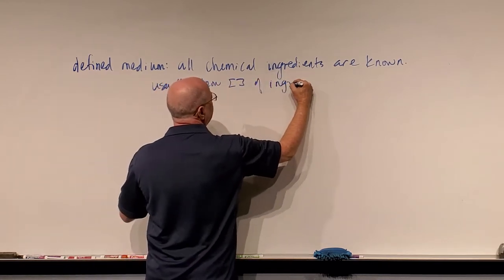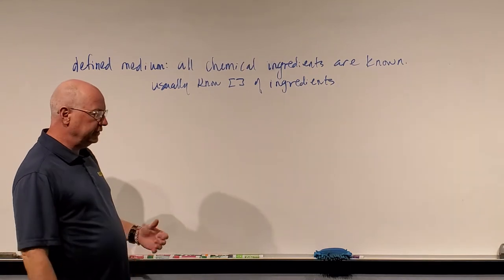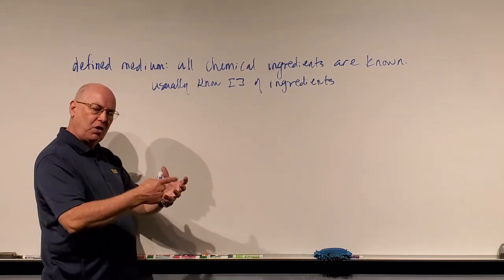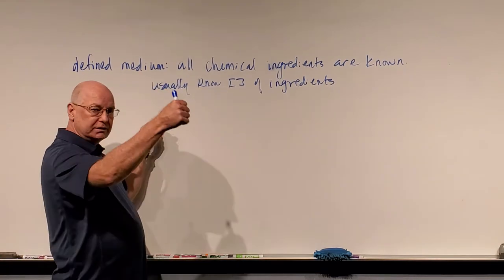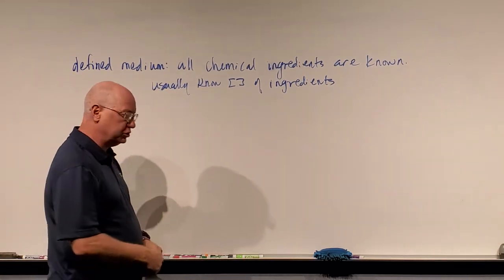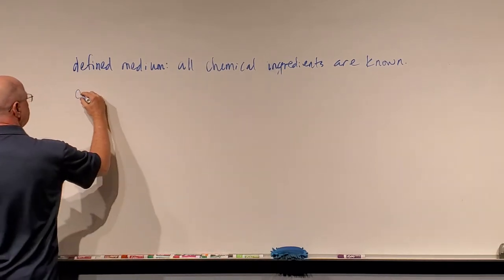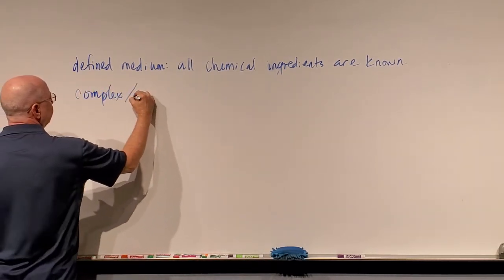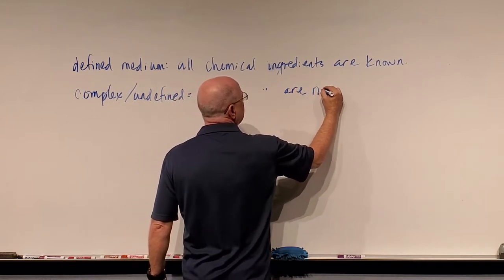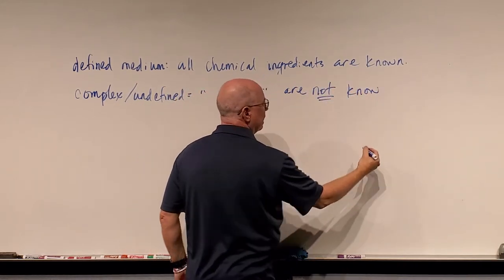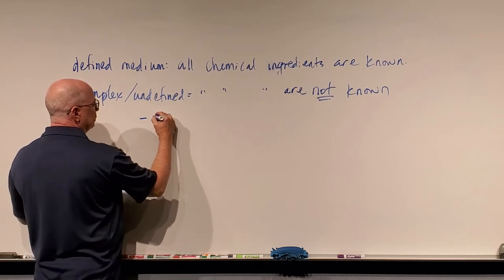With a defined medium, we know exactly what's in it and we know the concentrations of the ingredients. You can look up the recipe and make it from scratch without having to use ground-up cells. It's like taking all the ingredients out of your cabinet and making a cake from scratch. When we talk about a complex medium — also called undefined — all chemical ingredients are not known exactly. A clue that you're looking at these media is that they'll have something called a lysate or digest.